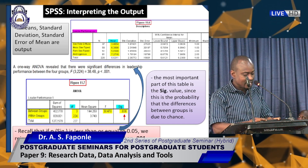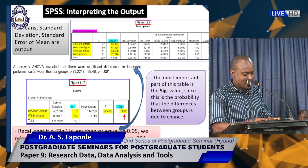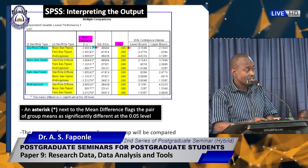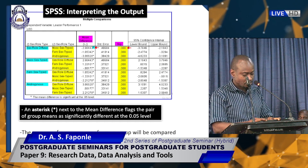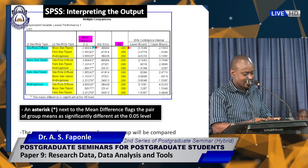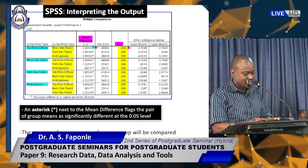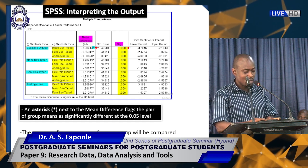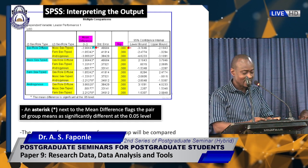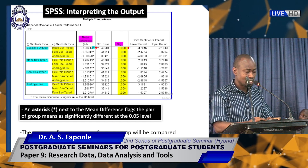Looking at the multiple comparison table, the mean performance score for one group is compared to that of the other three groups listed in the second column (highlighted in yellow). In the third column, we see an asterisk. An asterisk next to the mean difference flags the pair of group means as significantly different at the 0.05 level. When we run analysis and do multiple comparisons, we should look out for the asterisks — they indicate those that are significantly different and not due to chance.